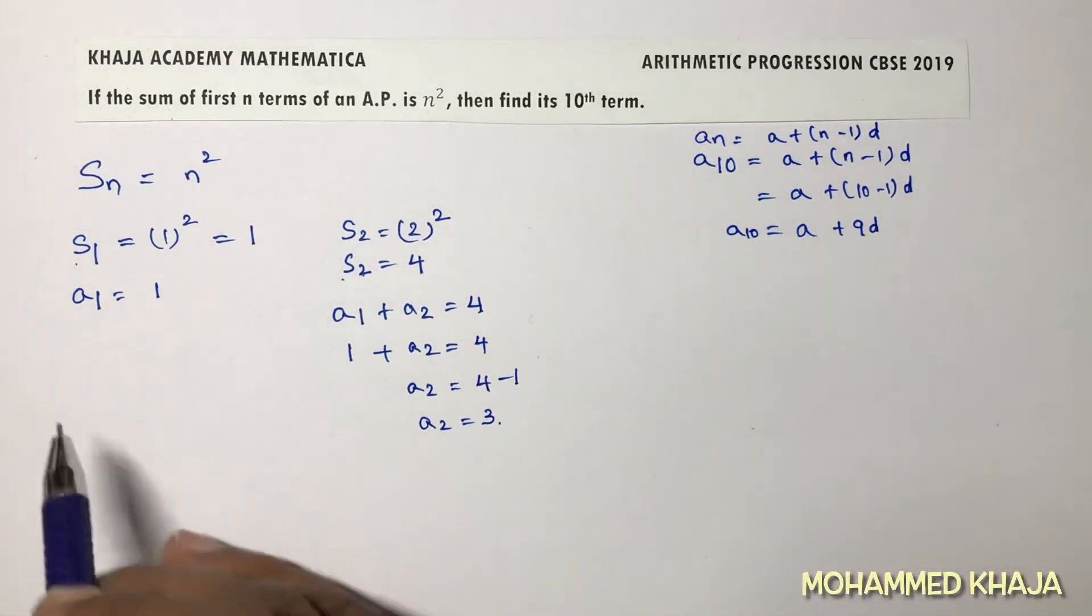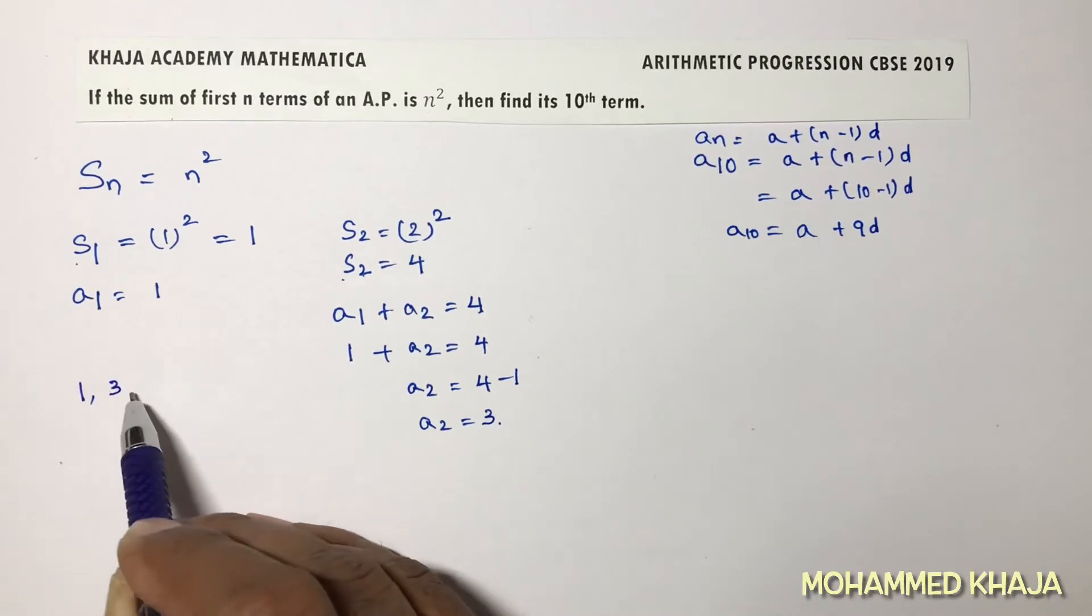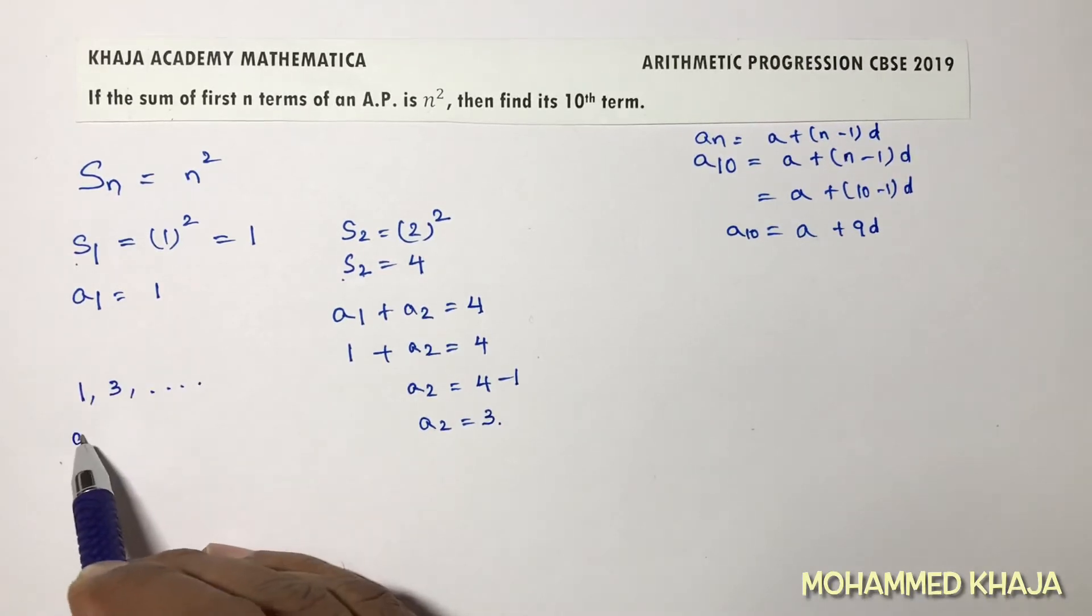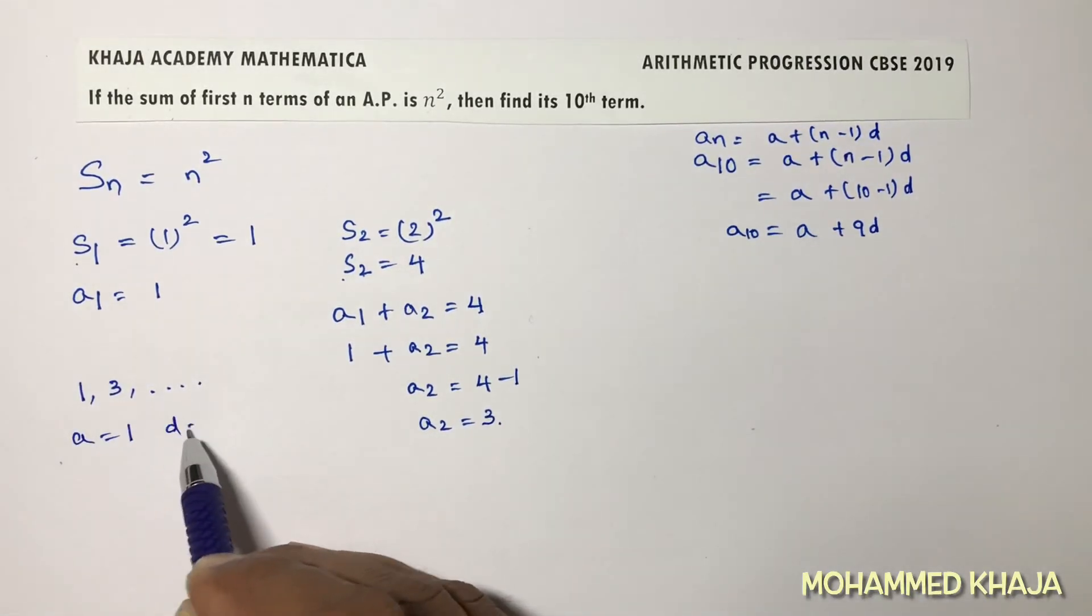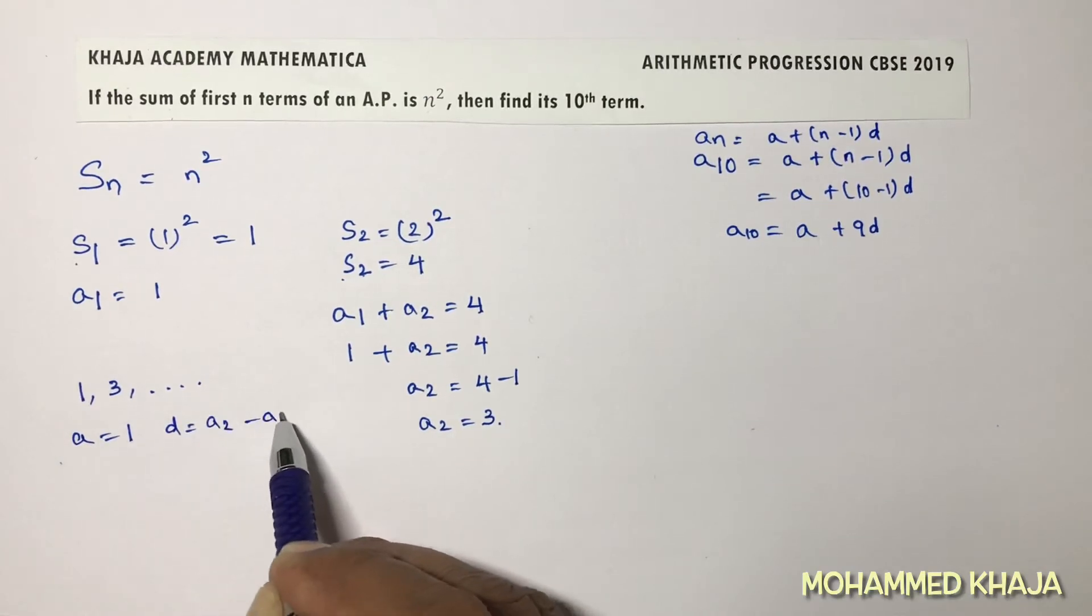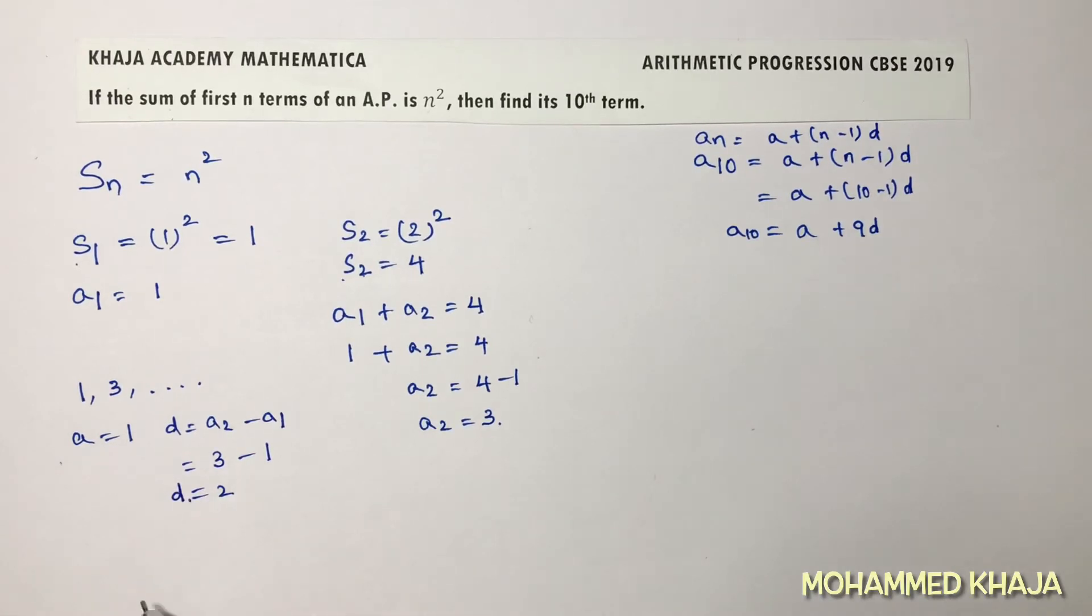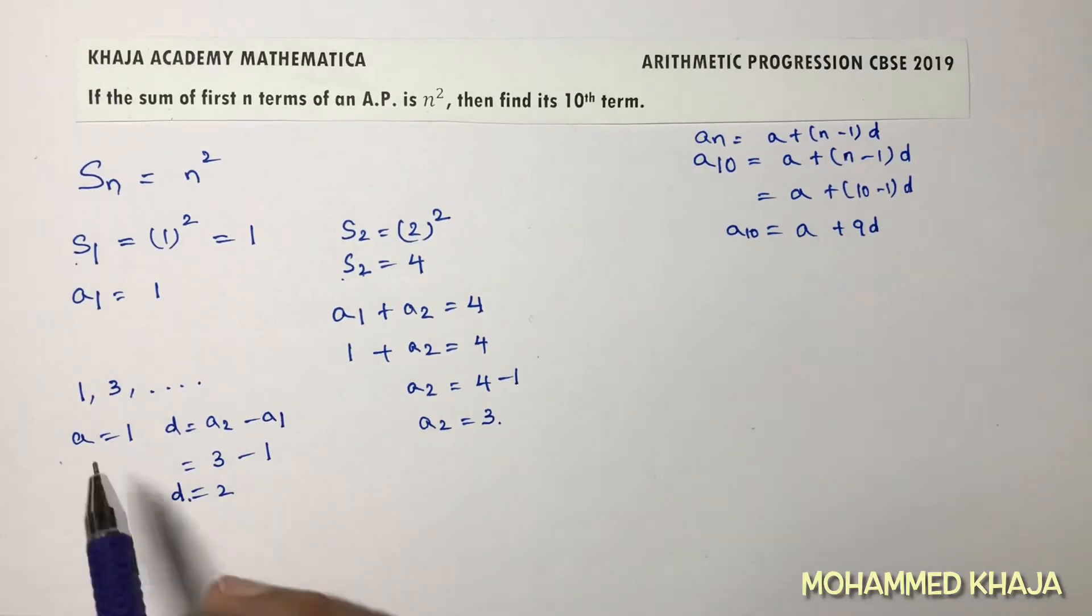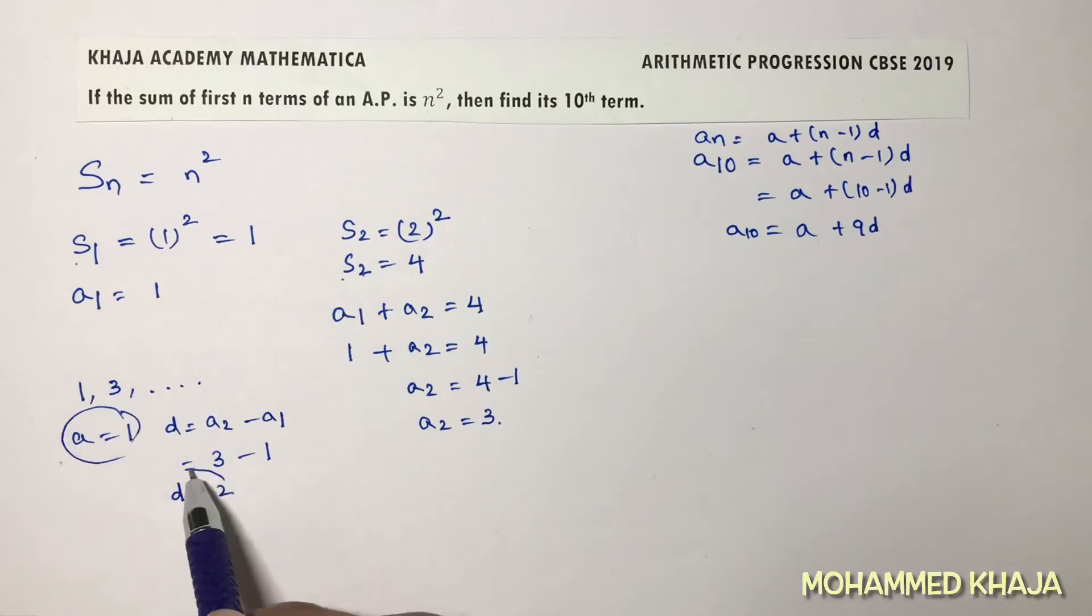Now you got the series. The series is 1, first term, 3, second term, and so on. So first term is 1. Common difference is a₂ minus a₁, which is 3 minus 1, which is 2. Common difference is 2. So you got the first term and the common difference.